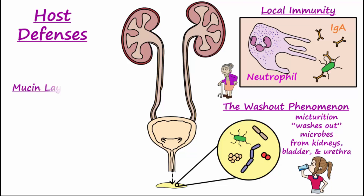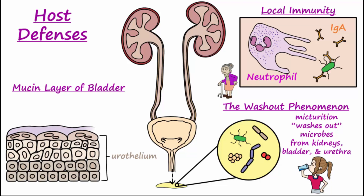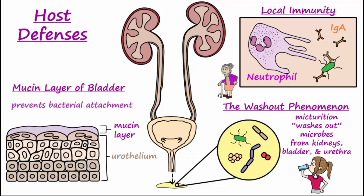A mucin layer lining the bladder forms from the secretions of bladder epithelial cells. This mucin layer attaches to the bladder wall to form a protective coating to help prevent the colonization of bacteria within the bladder. In women, estrogen is important in producing the protective mucin layer. With menopause, estrogen goes down, so the protective mucin also decreases, increasing UTI risk in postmenopausal women.